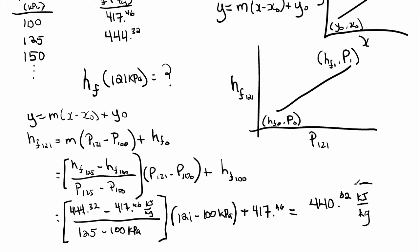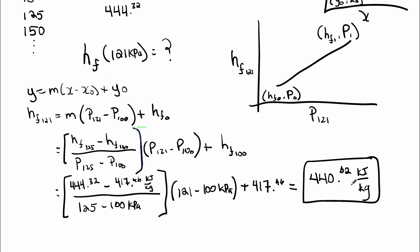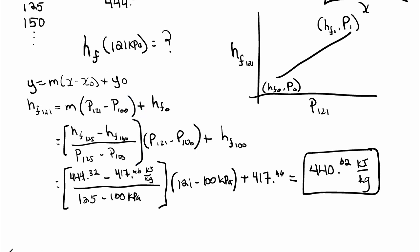This will be on your exam. You will have to know this. The tough part is that formula is not given to you. And again, I'll just summarize. The way to memorize that formula is y equals m(x minus x naught) plus what we used to call b, which is now y naught.